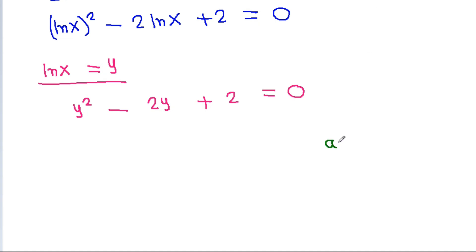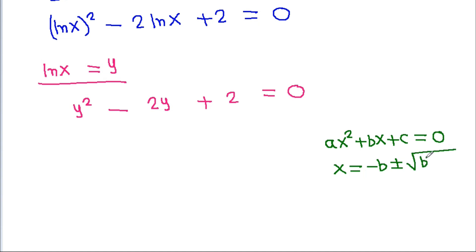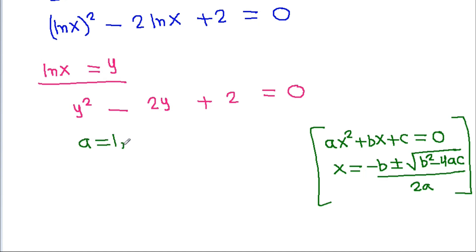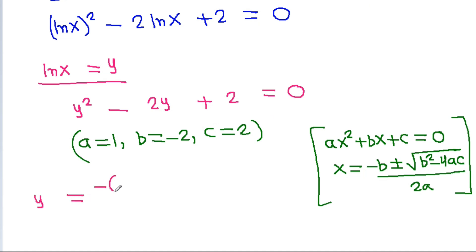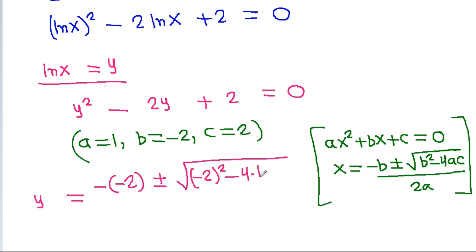For a quadratic equation ax² + bx + c = 0, the solution is x equals minus b plus or minus the square root of (b² minus 4ac), all divided by 2a. Here a equals 1, b equals minus 2, and c equals 2. So y equals minus(−2) plus or minus the square root of (−2)² minus 4 times 1 times 2, divided by 2 times 1.